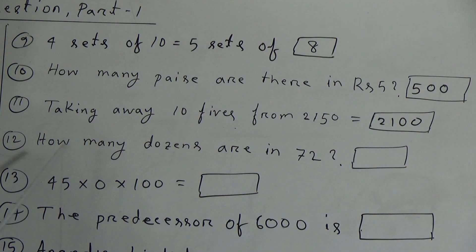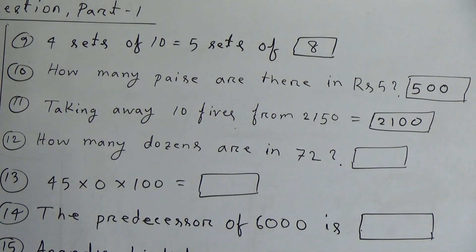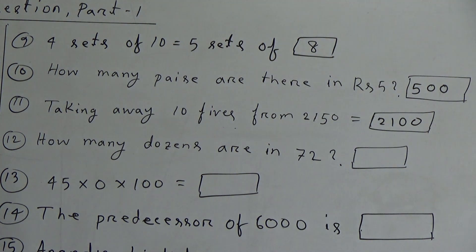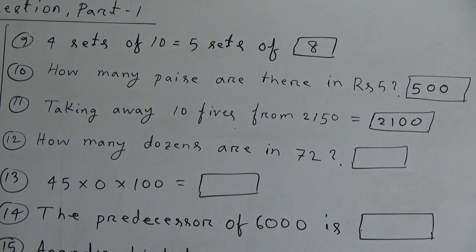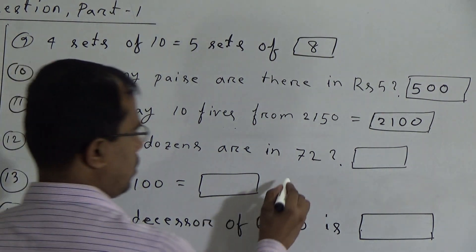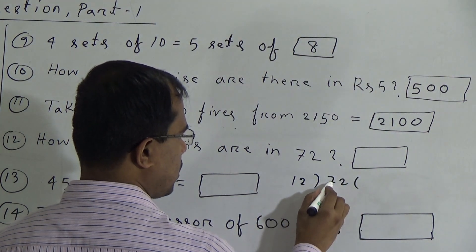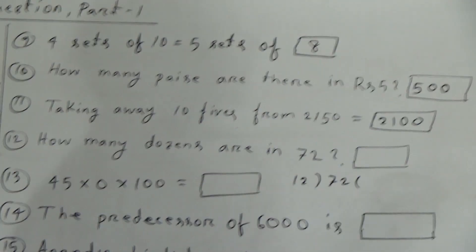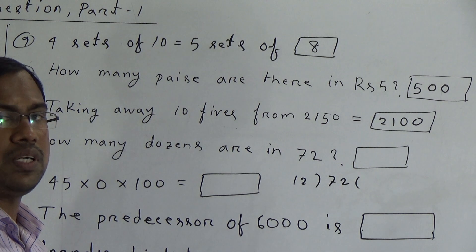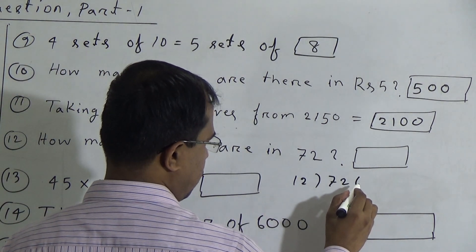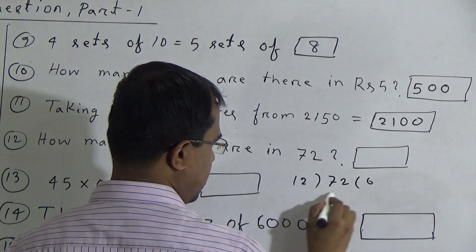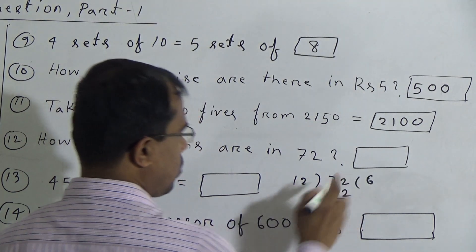Twelfth question: how many dozens are there in 72? We know that 1 dozen is equal to 12 things. That means how many 12s can make 72. If we divide 72 by 12, we can get it. 12 ones are 12, 12 twos are 24, 12 threes are 36, 12 fours are 48, 12 fives are 60, and 12 sixes are 72. So the answer will be 6.